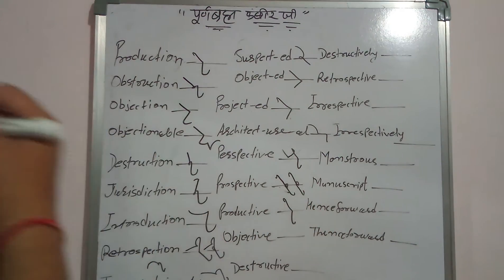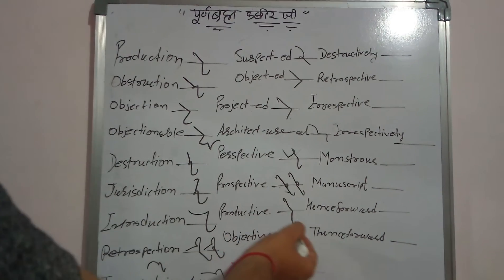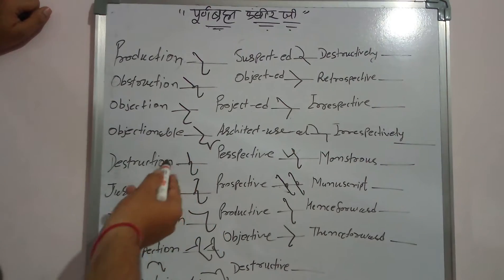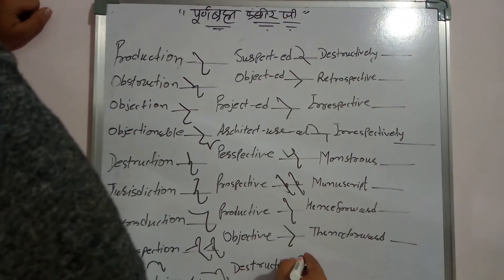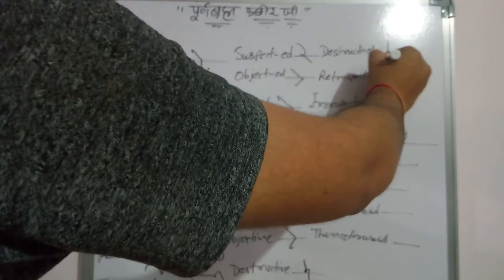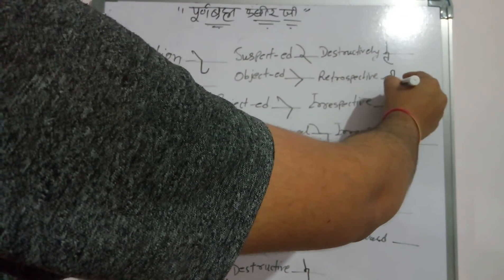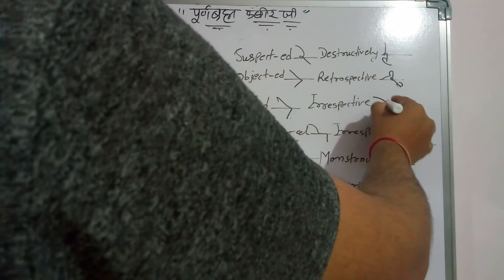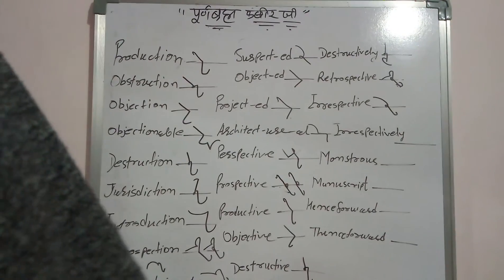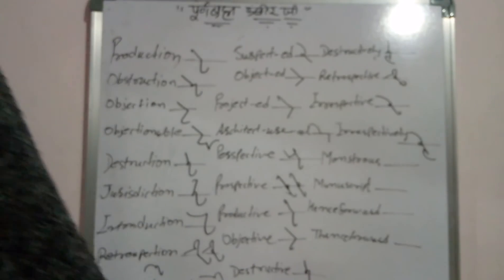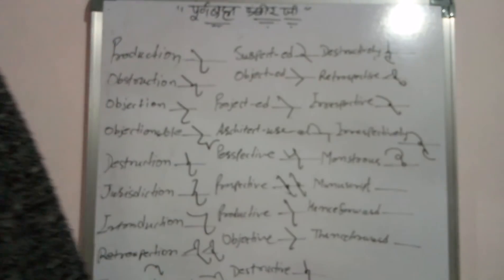को अगर बड़ा कर दिया जाए तो उसको -शन करेंगे और छोटे में -ट्यूट। This is key. Productive. Objective, objective. For your way objection. Destructive, destructive. Destructively, destructively. Retrospective, retrospective. Irrespective, irrespective, irrespectively. Monstrous, monstrous. Manuscript, manuscript.